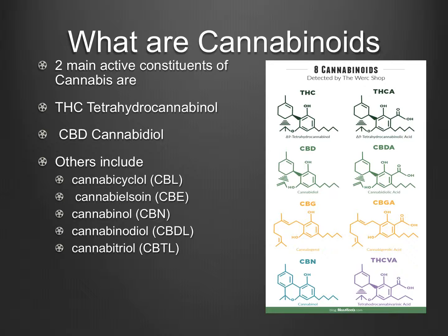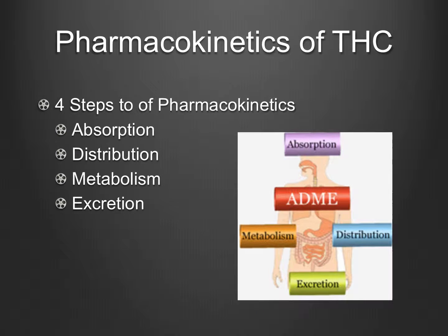In the image, we see THC and CBD on the top left. You can see that all the structures are very similar as they're all closely related. For this investigation, we're going to focus on the pharmacokinetics of THC as it is the most abundant cannabinoid in most cannabis.